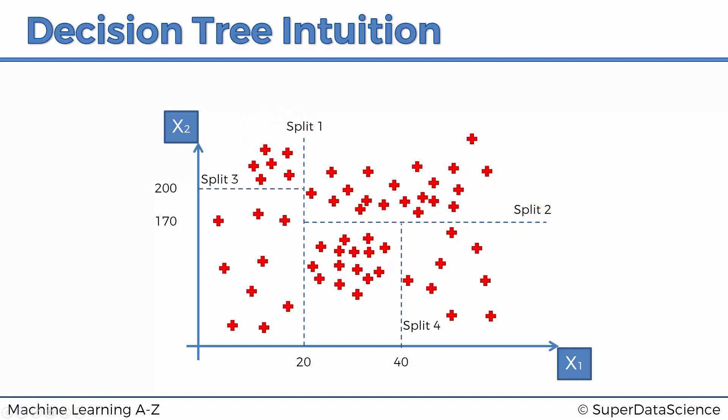By splitting these leaves, once it can't add any more information, then it stops. Or the algorithm could, let's say, stop when you have less than 5%. If you were to conduct a split, then you'd have less than 5% of your total points in that leaf and then that leaf wouldn't be created. So there are different variations or different options for that to happen.